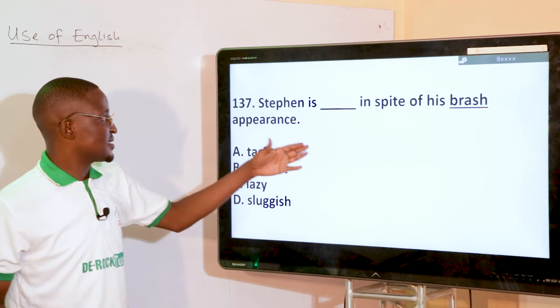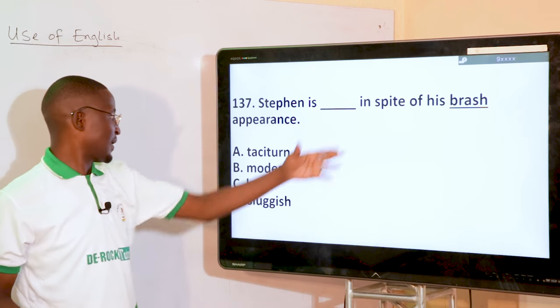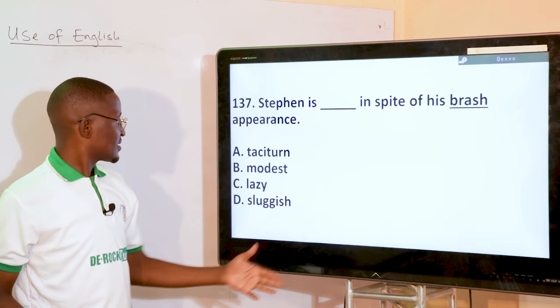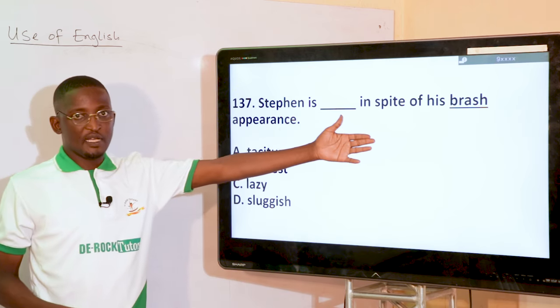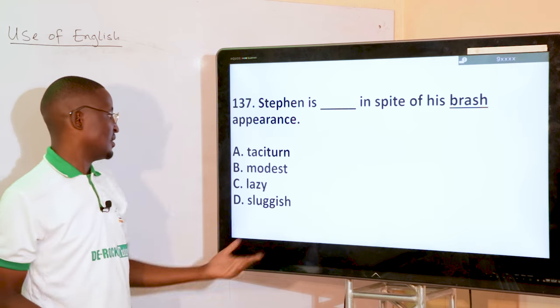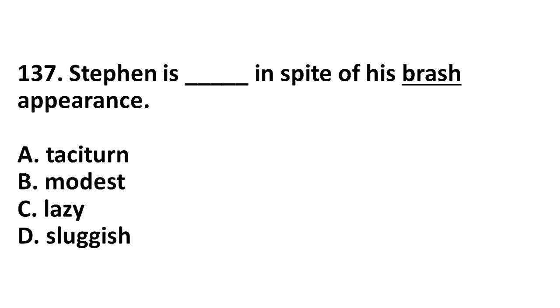Steven is dash in spite of his brash appearance. What could be an antonym of brash? That is modest — modest, option B, answers as antonym to brash.